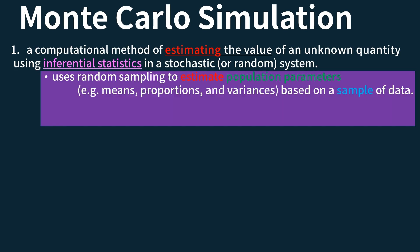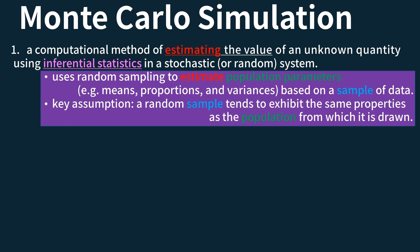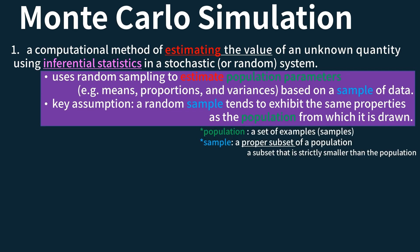Inferential statistics uses random sampling methods to estimate population parameters such as means, proportions, and variances based on a sample of data. The key assumption underlying inferential statistics is that a random sample exhibits the same properties as the population from which it is drawn. A population is a set of examples or samples, and a sample is a subset that is strictly smaller than the population.